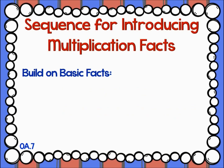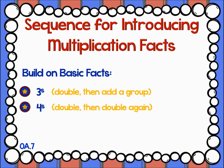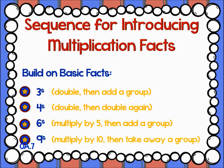Once students have mastered the basic facts, teach the facts that build on the basic facts. For example, for 3's, you would multiply by 2 and then add another group. For 4's, you would double and then double again. For 6's, you would multiply by 5 and then add another group. And for 9's, you would multiply by 10 and then take away one group.